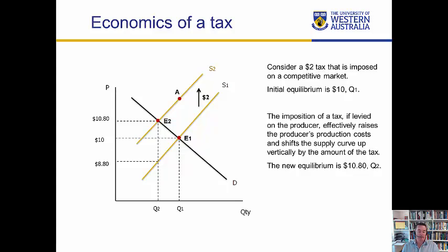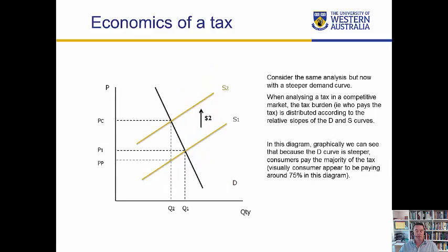Quantity does decrease in the market from Q1 to Q2, which is very often the point of a tax — to decrease the amount of consumption in a particular market. But while the reduction in consumption is interesting, it's really the burden of the tax that we're interested in here. What you'll see in the next slide is that the burden of the tax between consumers and producers depends upon the slopes of the curves.